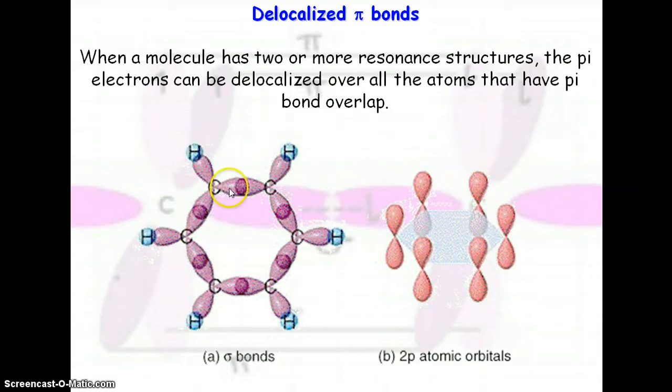Well, what we have here is a picture of all the sigma bonds. So in the sigma bonds, the double bonds and single bonds all have sigma bonds. You have all these sigma bonds between all the carbon atoms.